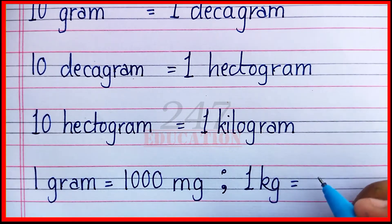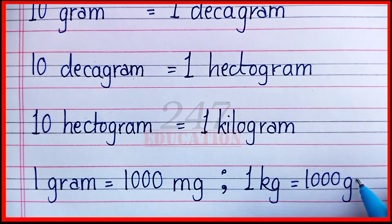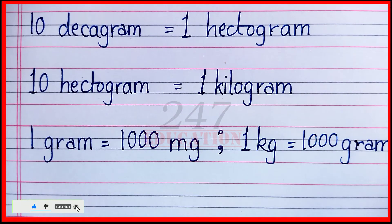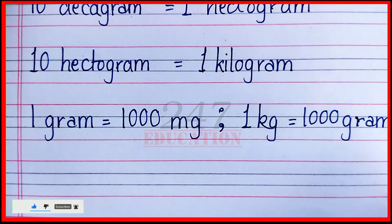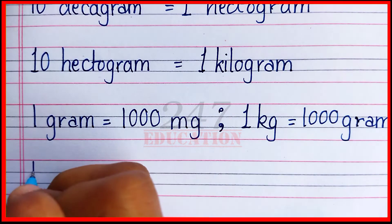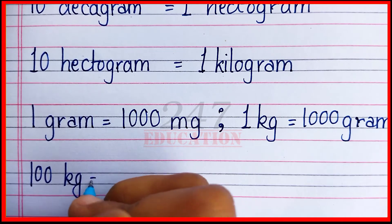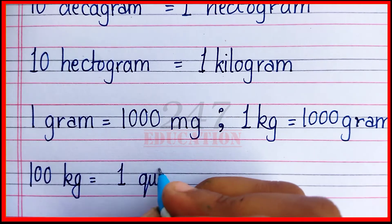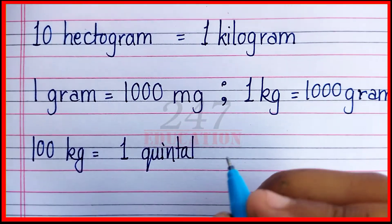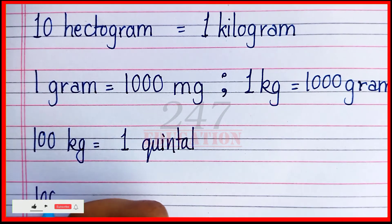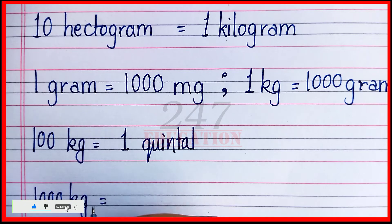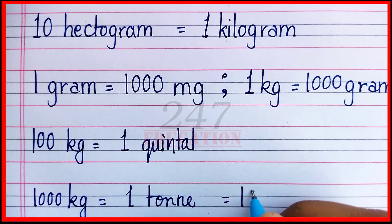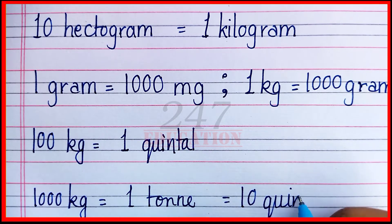1 kilogram equal to 1 quintal. 1000 kilogram equal to 1 ton, equal to 10 quintals.